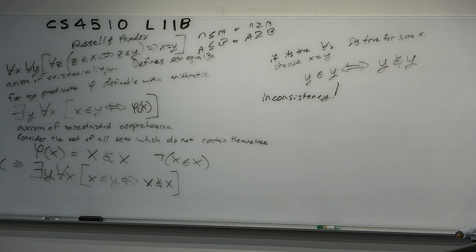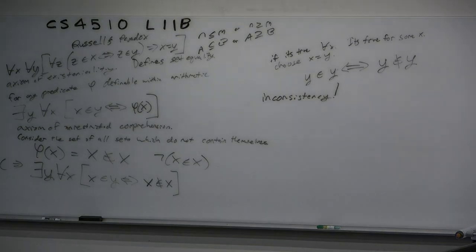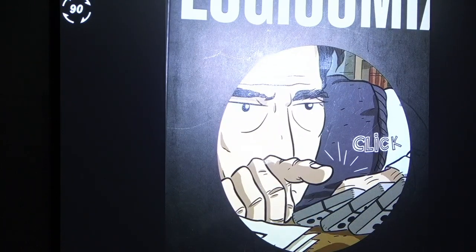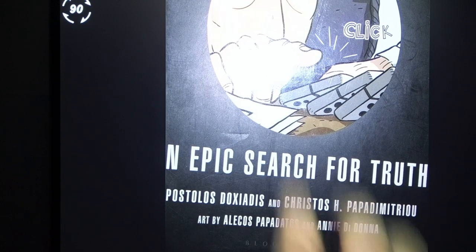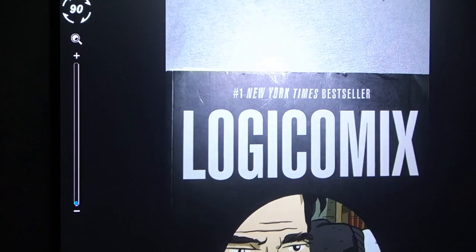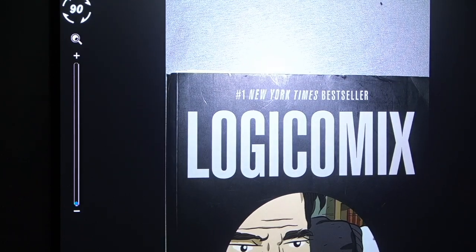Have you heard of Papadimitriou? He's the P in the DPV algorithms book. This is actually a graphic novel by Papadimitriou and others — not a textbook. It's a graphic novel of the life of Bertrand Russell. I have some sections I want to pull out to show you the history of what happened.